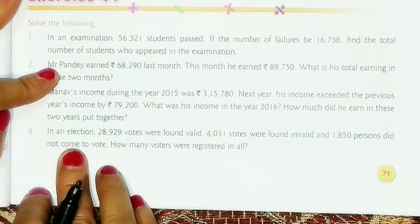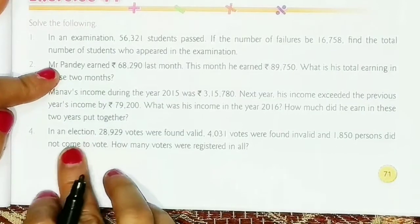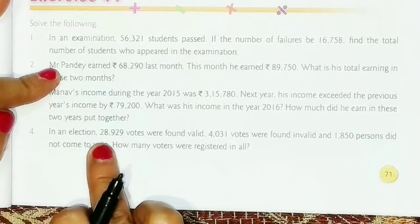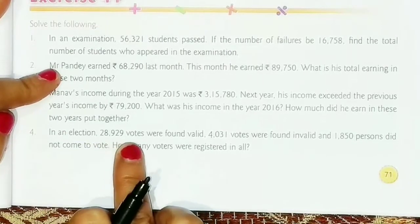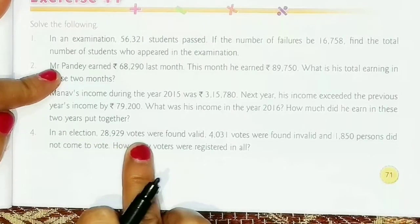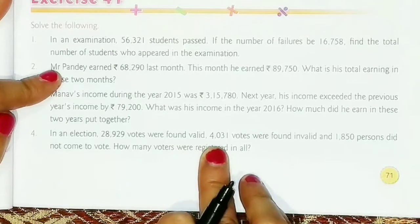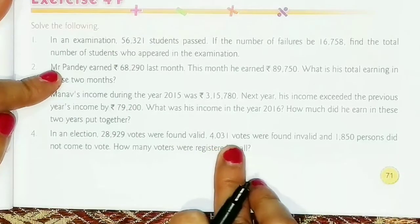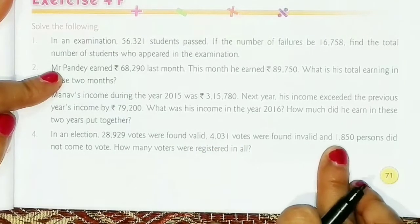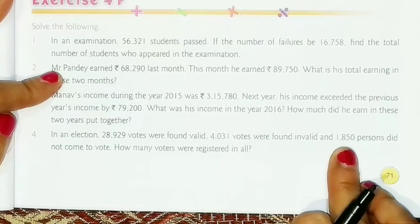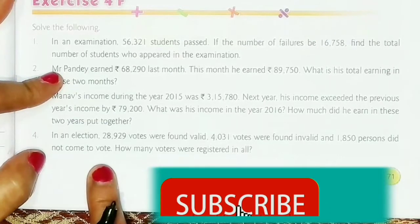Let us solve question number 4. The question says: in an election, 28,929 votes were found valid, 4,031 votes were found invalid, and 1,850 persons did not come to vote.